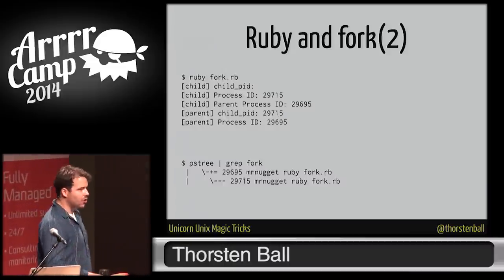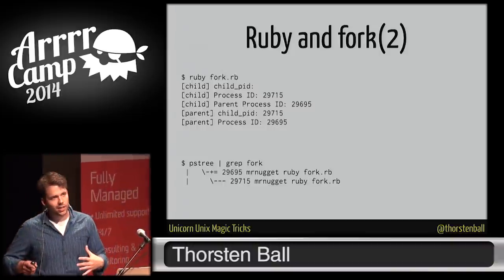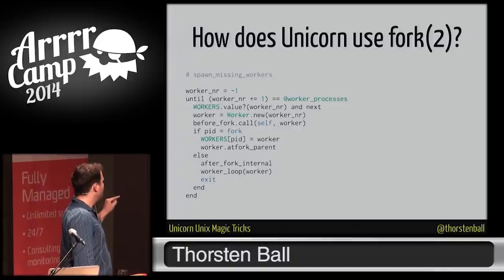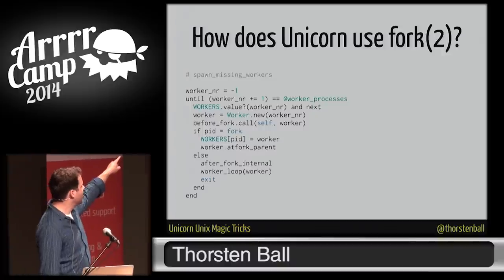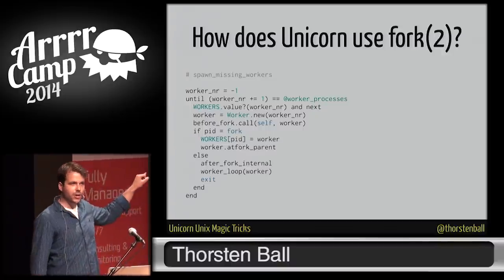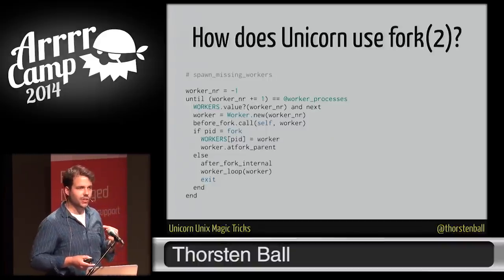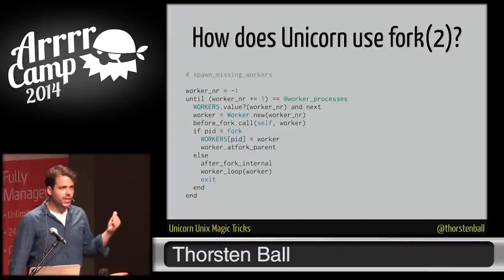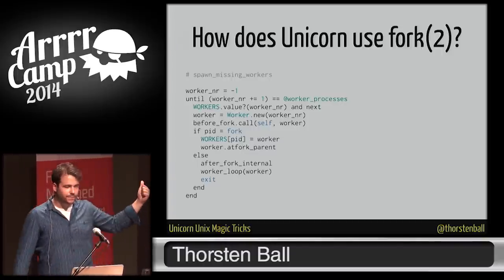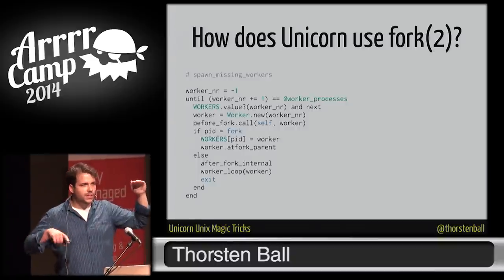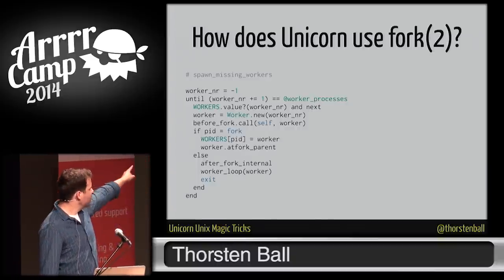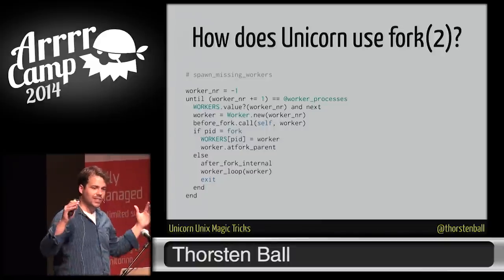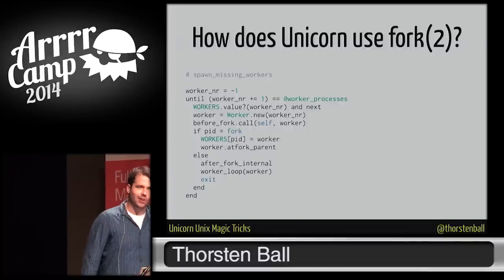So how does Unicorn use fork? As I said, Unicorn has this master-worker architecture. Actually, it's quite simple. This is a snippet of Unicorn source code — the main thing is right in the middle: a call to fork. If there's a return value, we're in the parent process, and it saves the child process ID to keep track of running processes. In the child process, it just calls the worker loop. After this function runs 16 times, you have one master process and 16 worker processes — all doing the worker loop and then exit. That's the main thing Unicorn does to start up its master-worker architecture: just a call to fork and checking the return value.